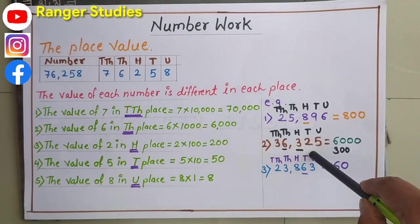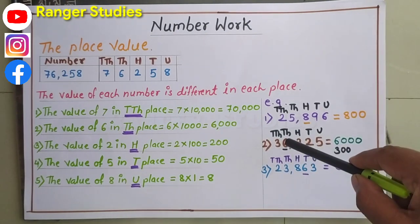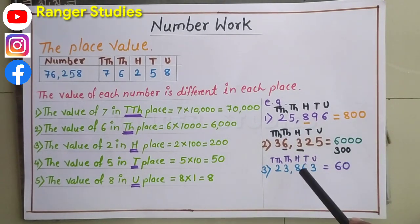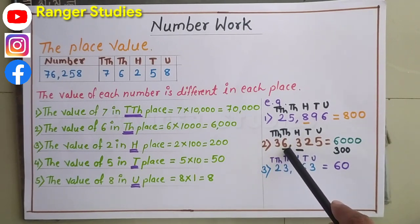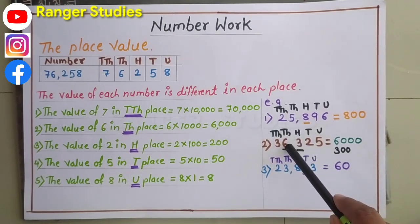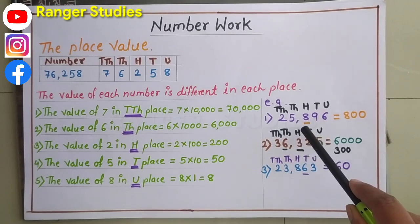Look at the second example, 36,325. Here are two underlined digits, 6 as well as 3. So first is 6. 6 multiplied by 1,000 means 6,000. And 3 multiplied by 100 means 300.